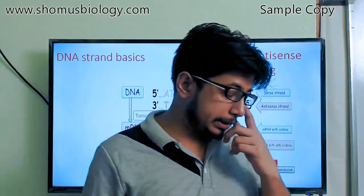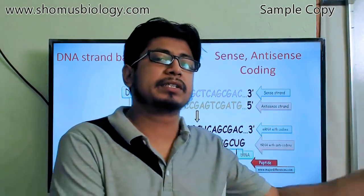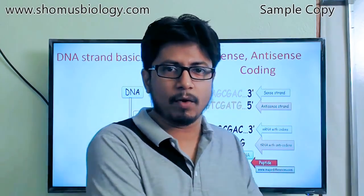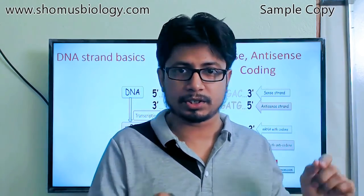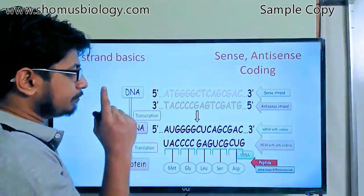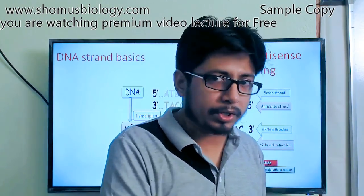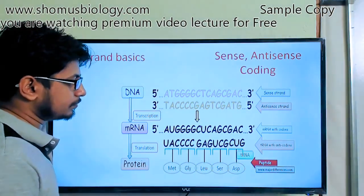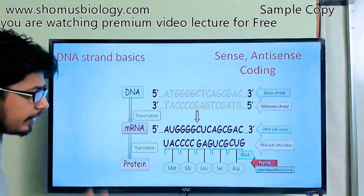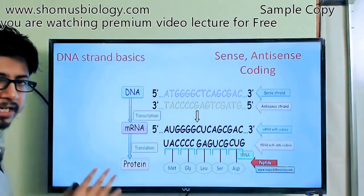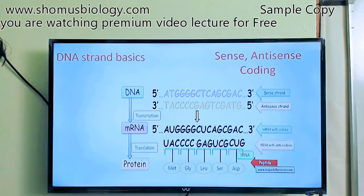One very interesting and important thing we need to know is regarding DNA strands. When we discussed DNA replication, we didn't need to worry about which strand was involved because both parental strands are utilized as templates. But in transcription, only one strand is used as a template to make RNA. That's why it's really important to know which strand is acting as the coding strand — there are different names: sense, antisense, coding, non-coding.